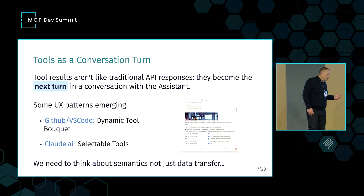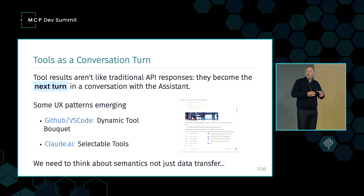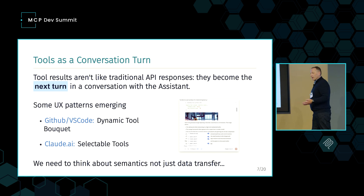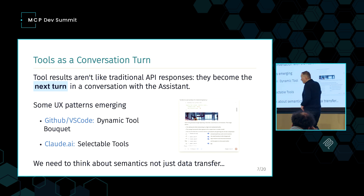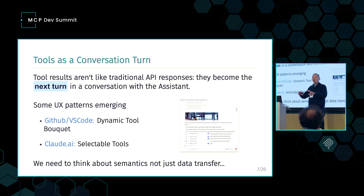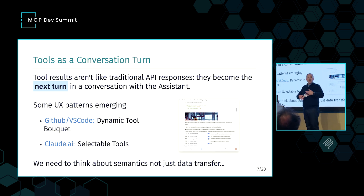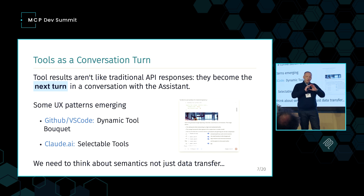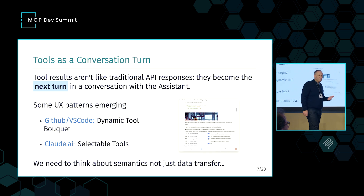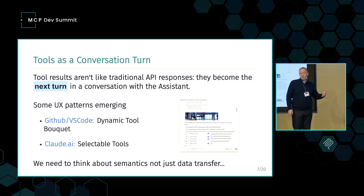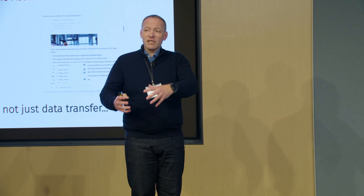When integrating with tools, unlike traditional API responses, we're intending to send results to the LLM and they become the next turn in the conversation. We can see some UX patterns emerging — for example, between VS Code and the GitHub MCP server, you can dynamically select a bouquet of tools if you know the user's intent, or select tools from the Claude.ai front end. But these patterns are really just transferring extra burden onto the user; if you've got 40 or 50 tools to select from, that's quite a tough ask.